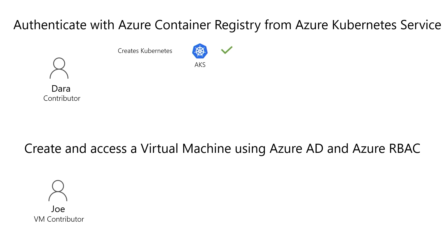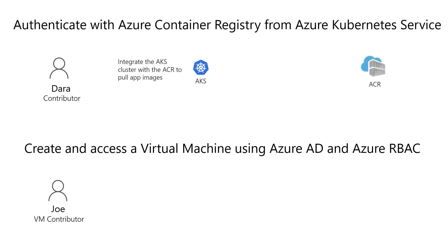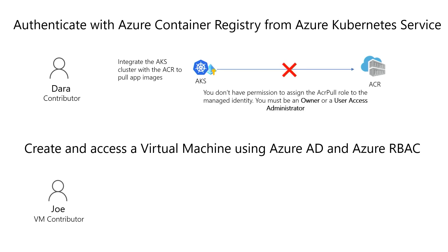Dada, since she's a contributor, she can create Kubernetes services on Azure. She can also create the Azure Container Registry. But when she's trying to integrate the AKS cluster with the Azure Container Registry to pull images, she's not able to do that because she needs to create role assignments. She needs to assign some roles to the managed identity, so she needs the owner or user access administrator role to be able to do this.